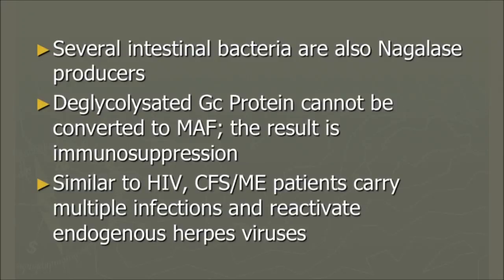Several intestinal bacteria are also producers of nagelase, which made this interesting for our group since we focus on the gut. The deglycosylated GC protein cannot be converted to MAF, resulting in immunosuppression. Similar to HIV, ME-CFS patients carry multiple infections and reactivate endogenous herpes viruses — not only HHV-6, but also EBV, CMV, herpes 1, and others. With biopsies we now do in different tissues, we also find a lot of herpes 7.